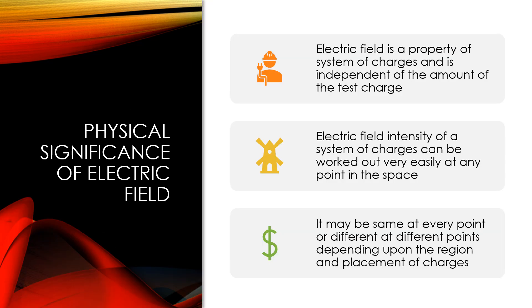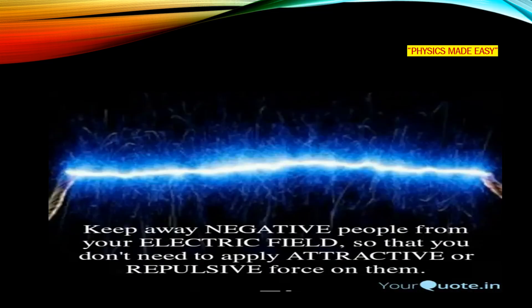I hope you know the answer to every question asked in the previous slides. Now it is time to understand the physical significance of the electric field. Electric field is a property of a system of charges because it deals with the charges, and it is independent of the amount of the test charge. The electric field intensity of a system of charges can be worked out very easily at any point in space. It may be the same at every point or different at different points depending upon the regions and placement of charges. So, keep away negative people from your electric field so that you do not need to apply attractive or repulsive forces on them!